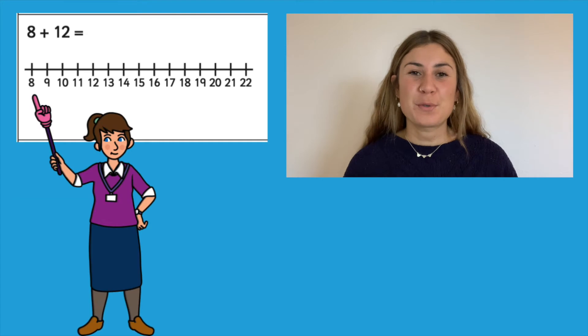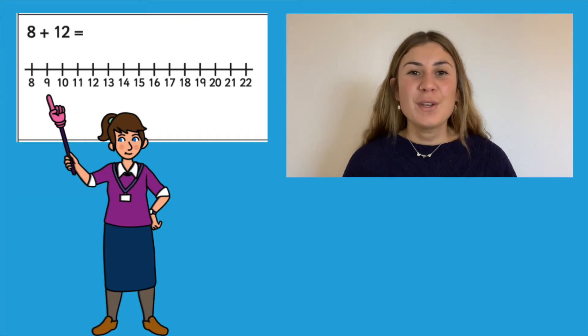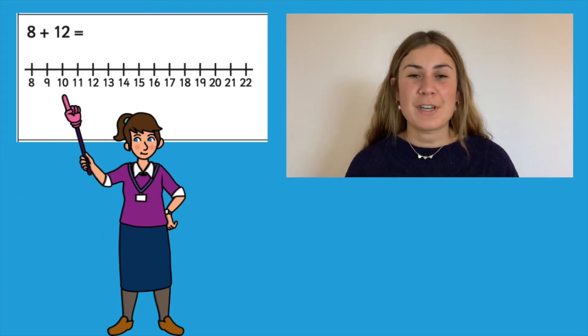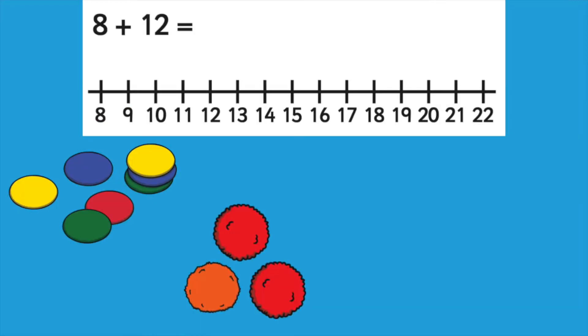To further support your children with using this number line, you could use a pointer to help the children as they count up. Alternatively, they could use different objects to place on the number they've already counted, for example counters or pom-poms.